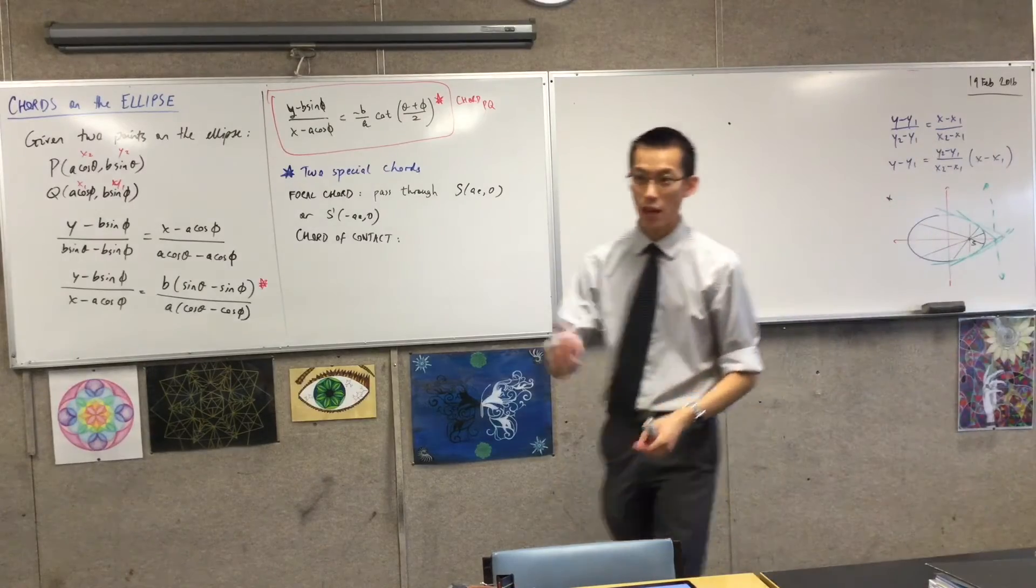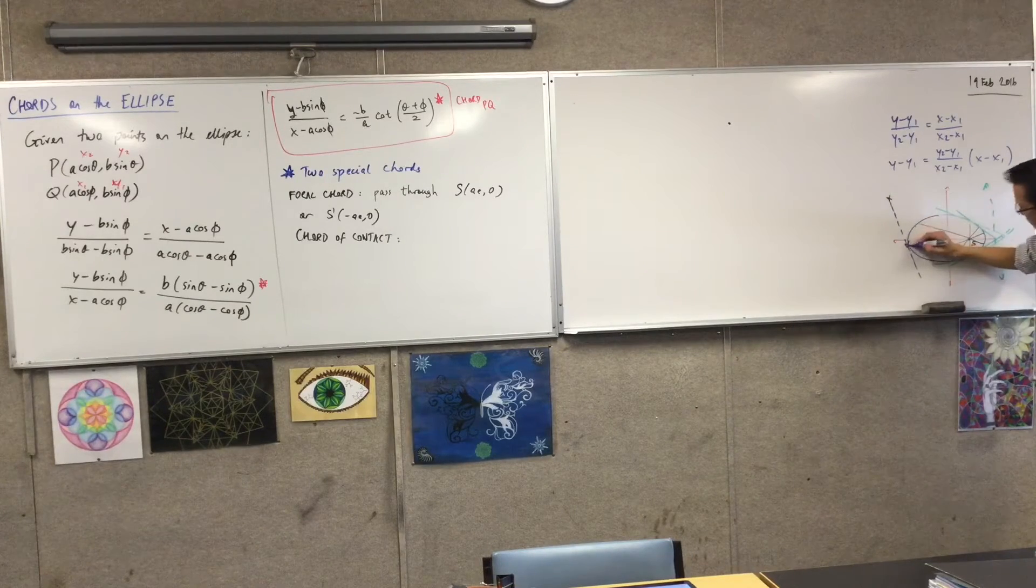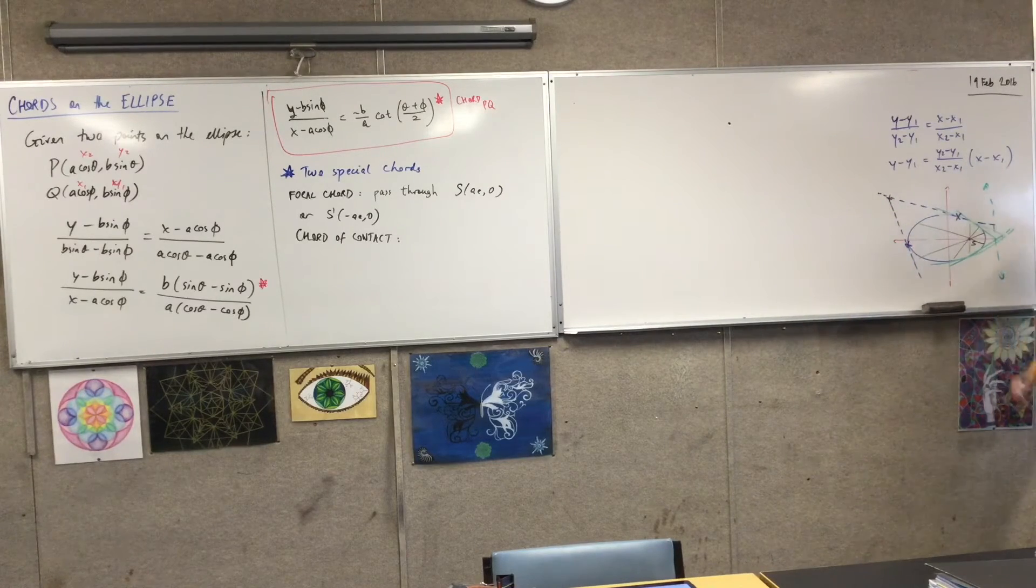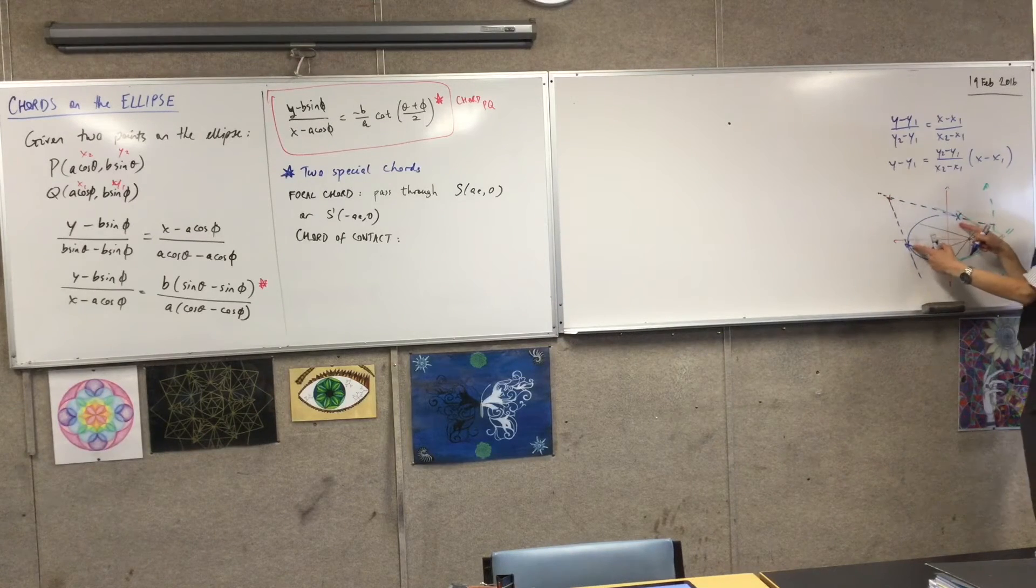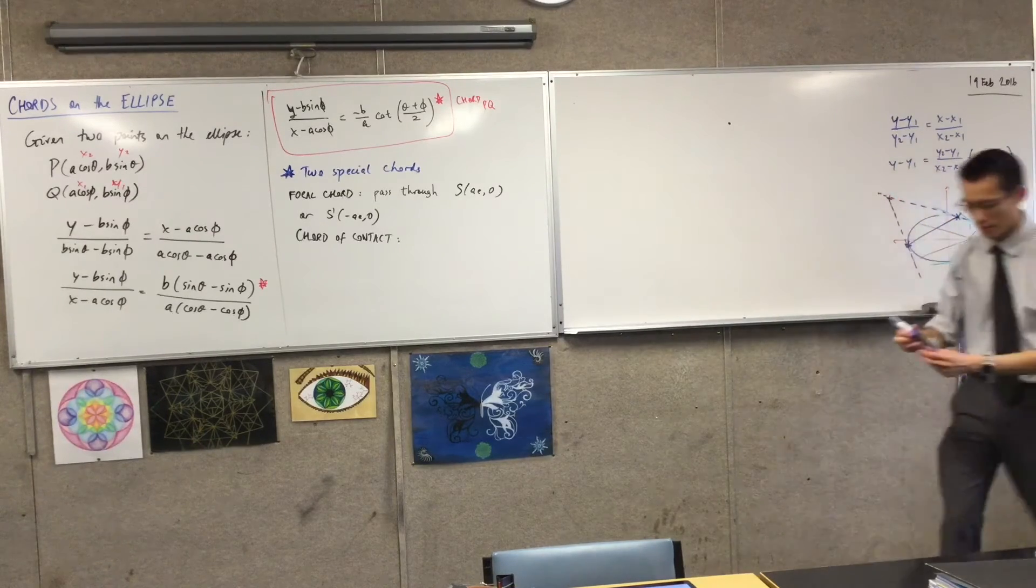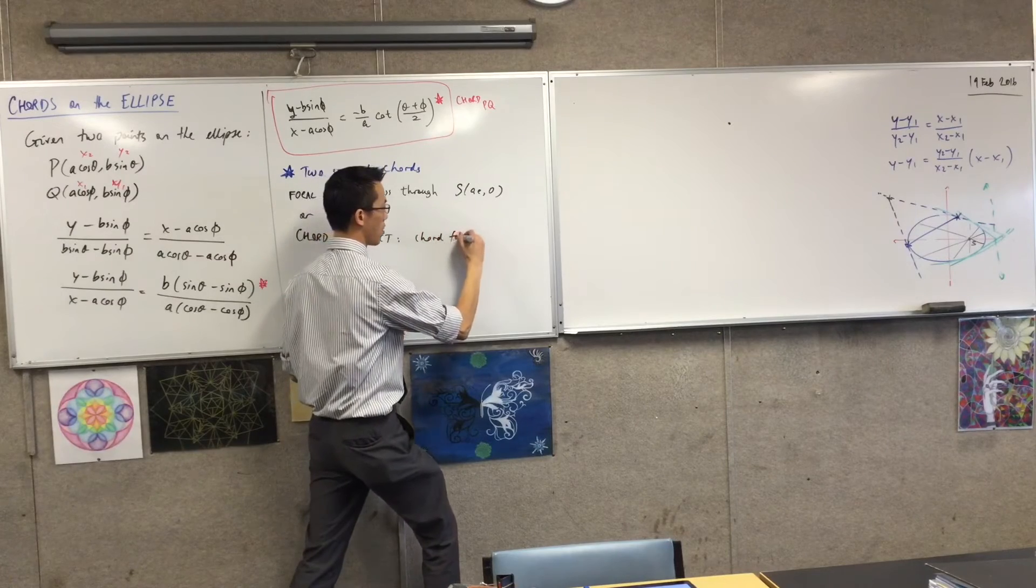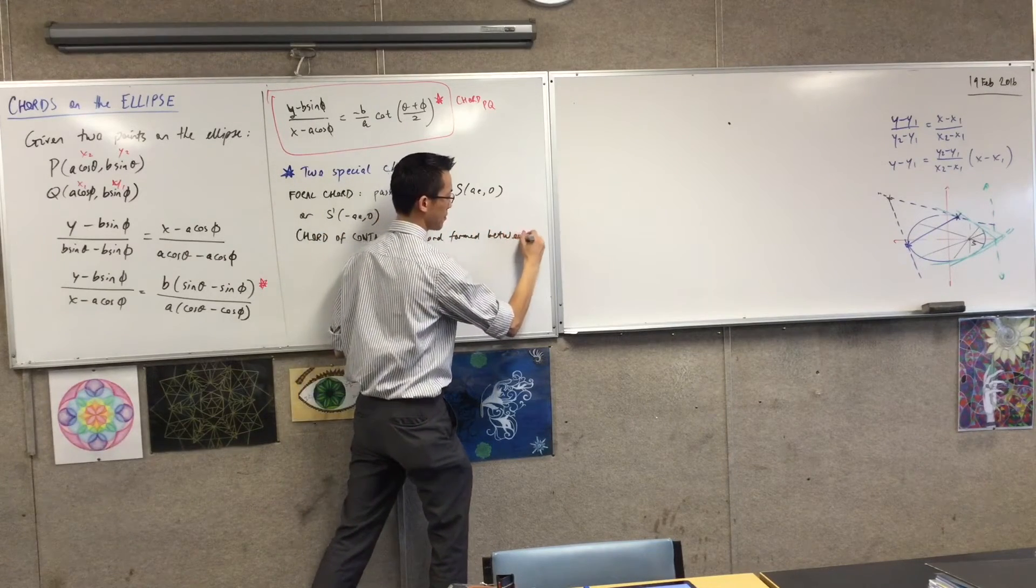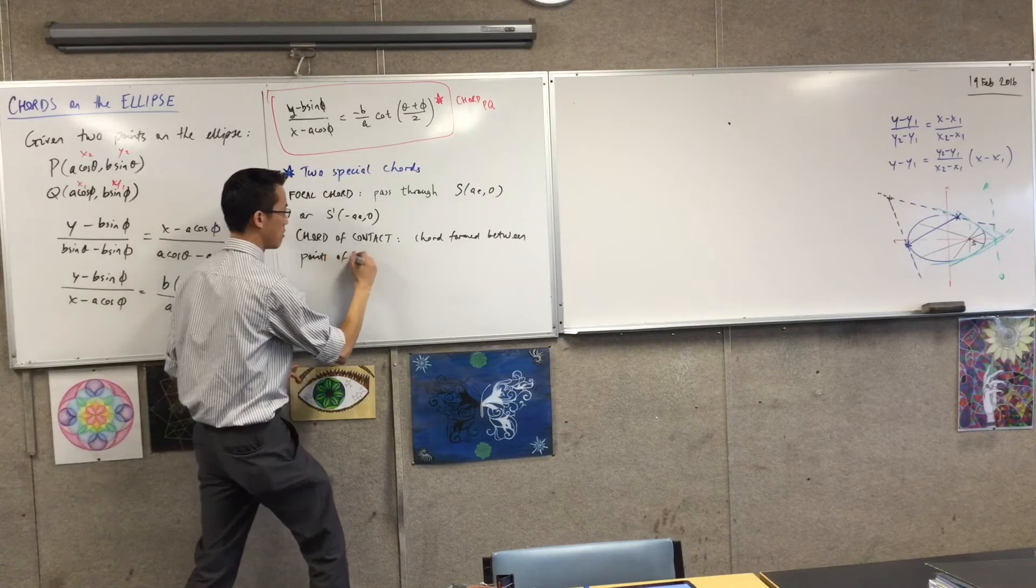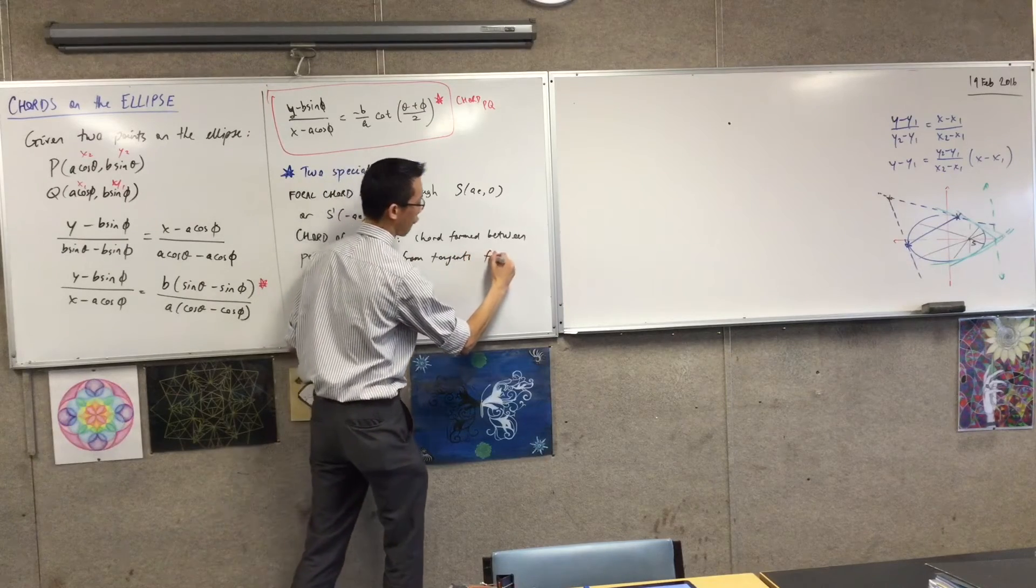Every external point is going to have two tangents to the ellipse, right? So there will be one that has a sharper angle, like that, and it will intersect once. And then you'll have another one, kind of at a bit of a shallower angle. So now you've got, from an external point, you've got two points of contact that your two tangents have. And of course what joins those points of contact is the chord of contact. So just jot down a reminder, that the chord of contact is the chord formed between the points of contact from tangents from an external point.